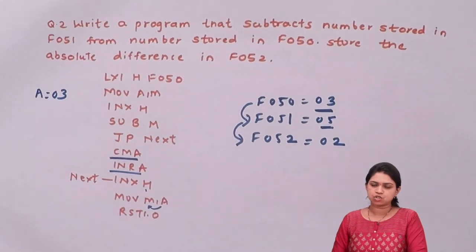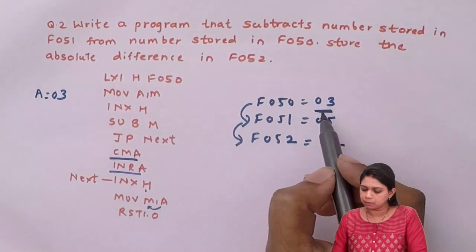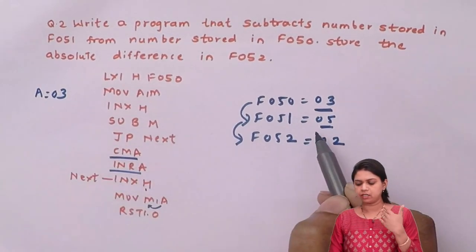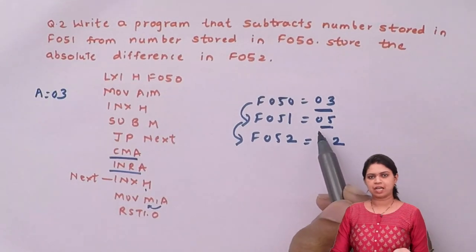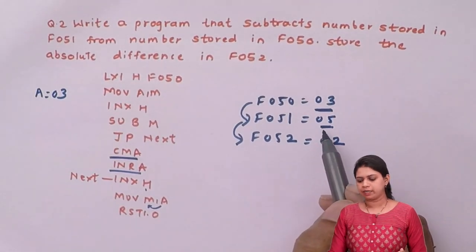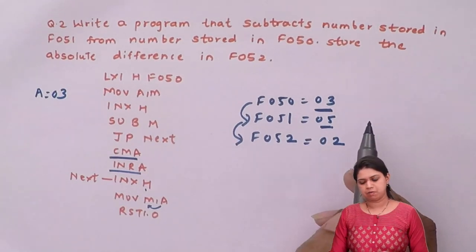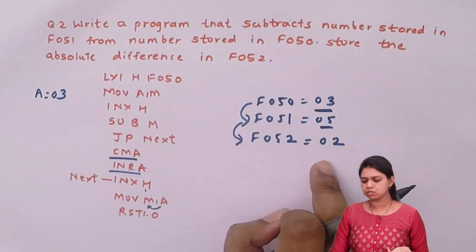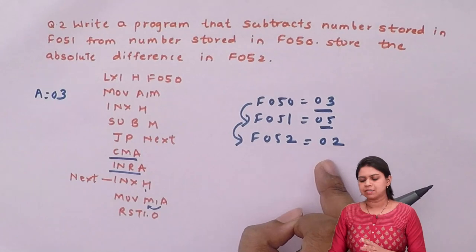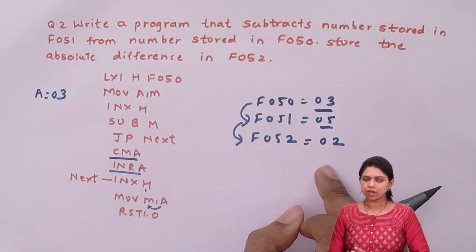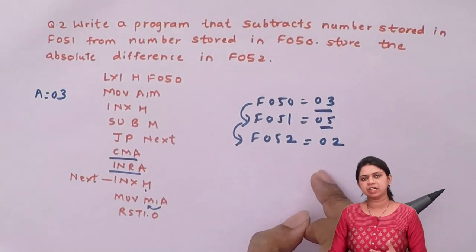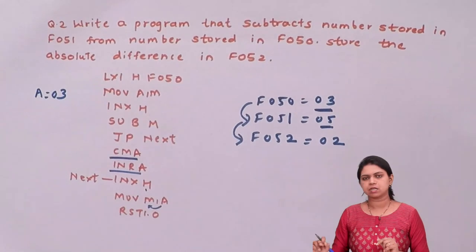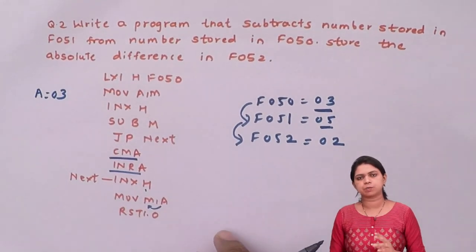So this is how we perform subtraction of 2 numbers. I loaded the number from F050 into the accumulator, moved to F051, subtracted that value from the accumulator, and stored the result in F052. If the answer was positive, it was stored directly. If the answer was negative, I performed a one's complement, added 1 to get the positive equivalent, and then stored that answer in F052.